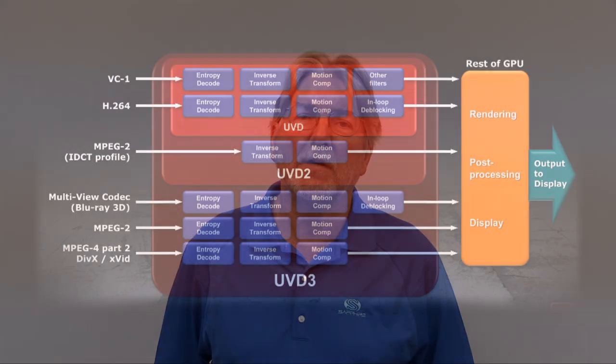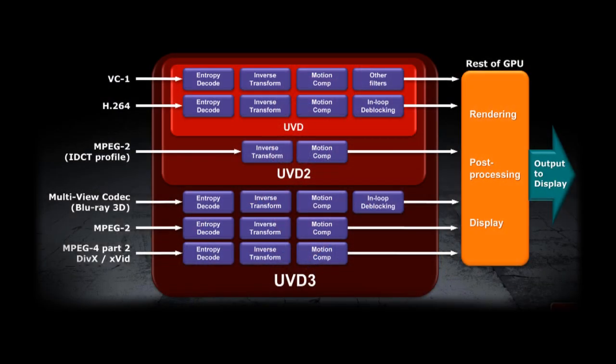For people who want to watch Blu-Ray movies or DVDs on their computer, the 6000 series has a built-in UVD. UVD is a unified video decoder that takes the work of decoding the video stream away from the CPU and does it on the graphics card, which is a much more efficient way to do it. In the 6000 series, the UVD is the third generation of this type of decoder. For the first time this supports MVC, which is a multi-view video coding used for Blu-Ray 3D.